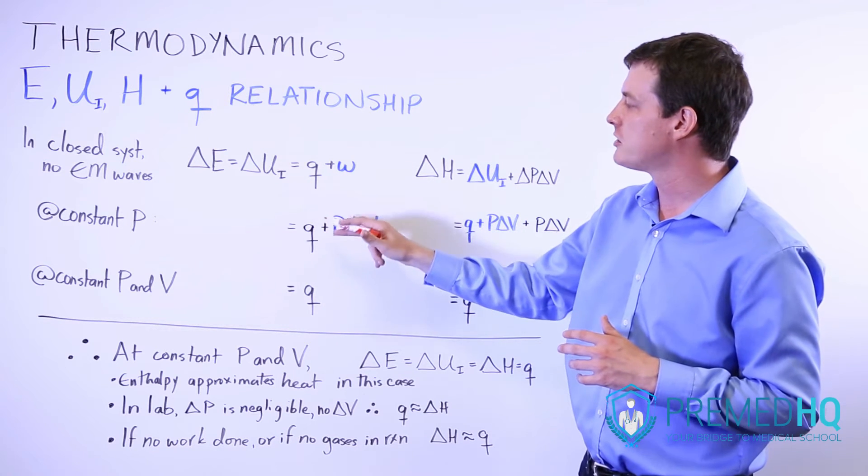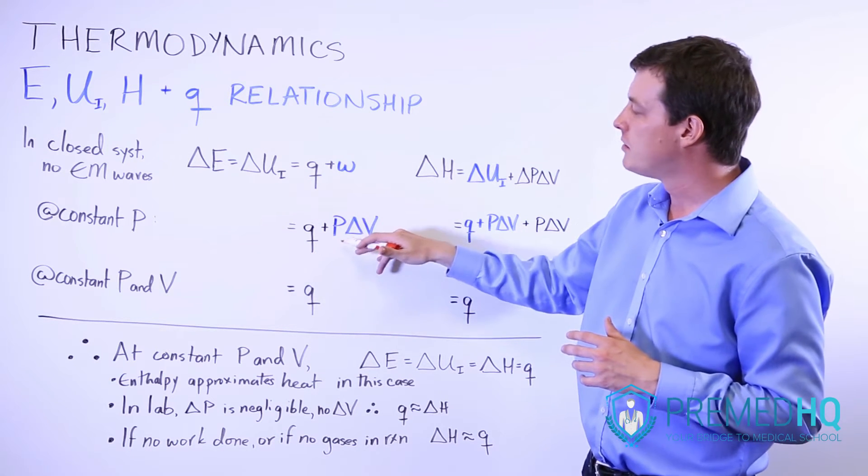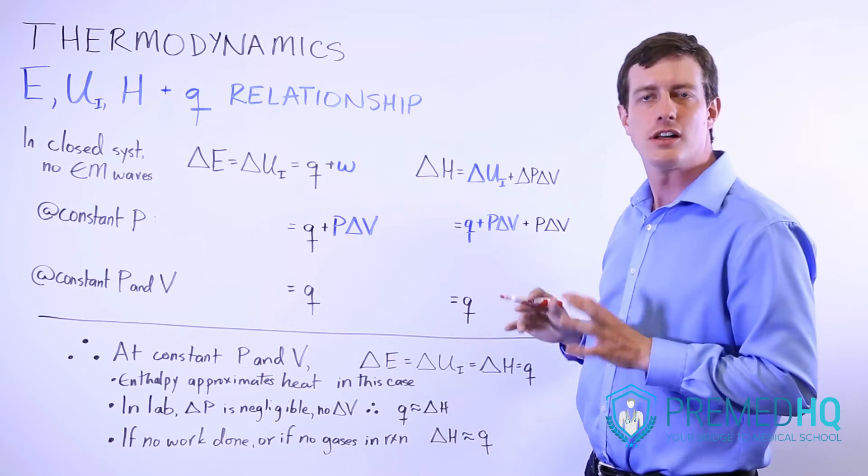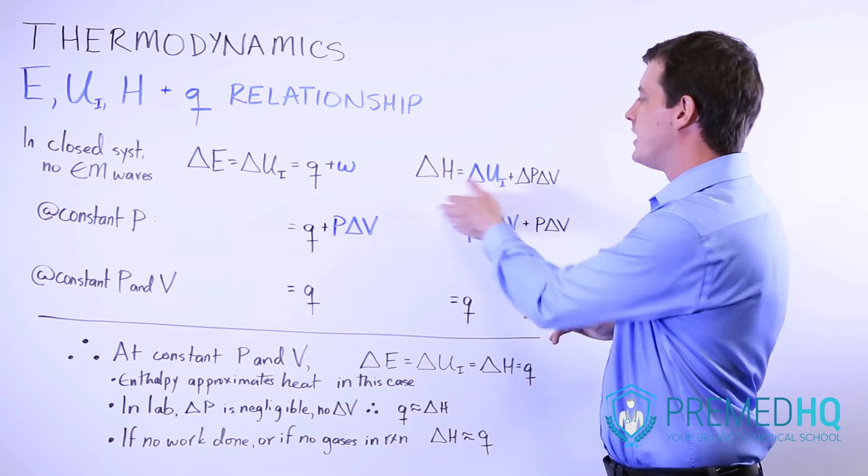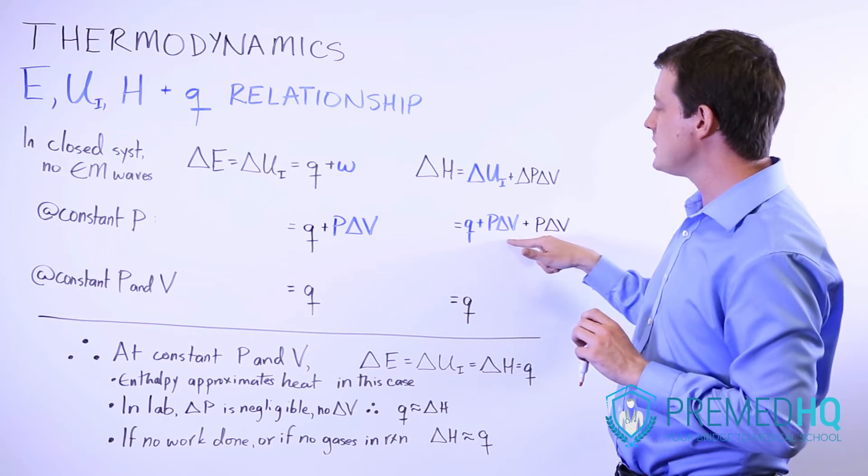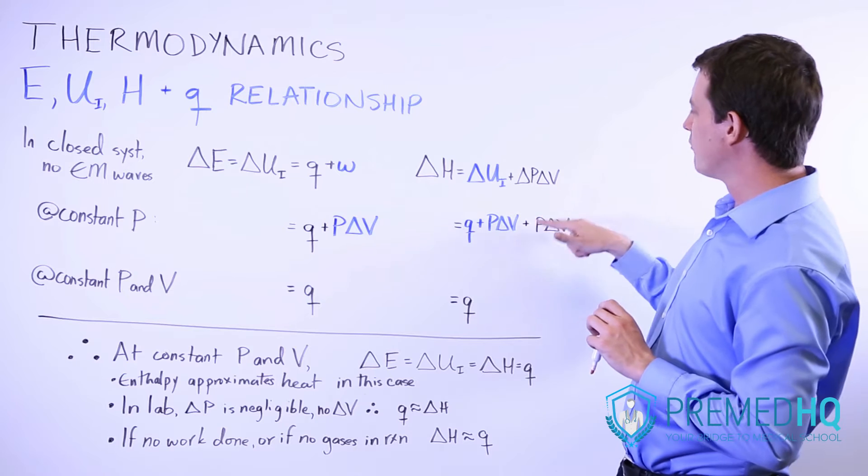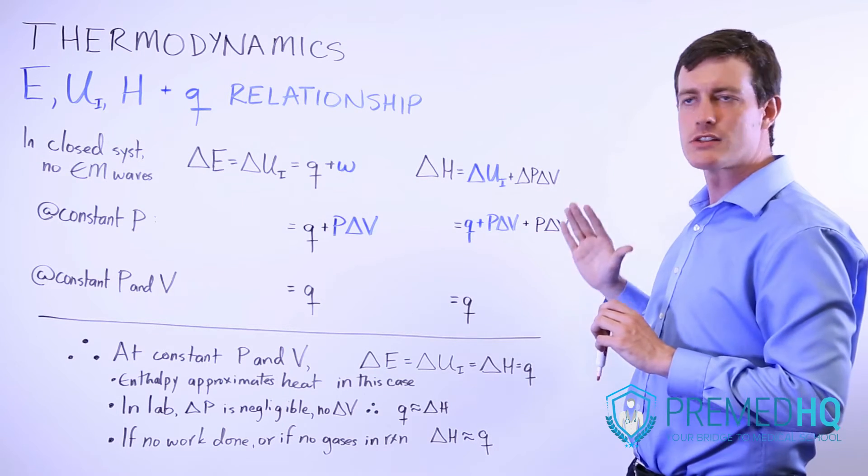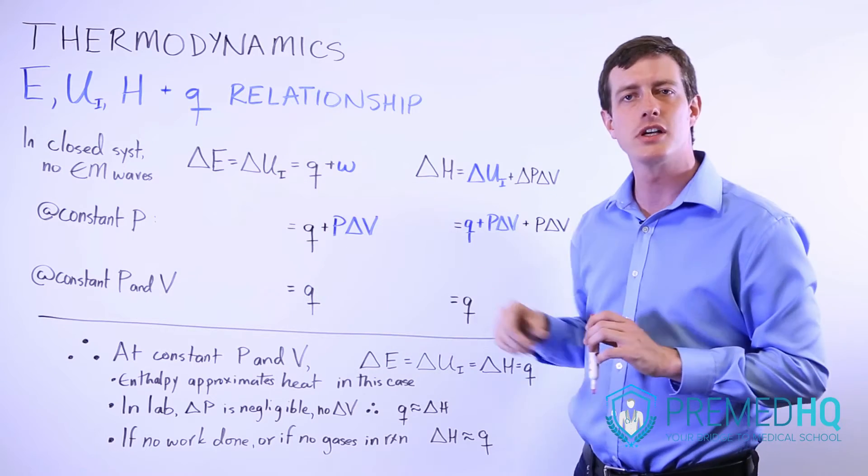So the change in internal energy will be equal to heat plus the change in volume times that constant pressure. The definition of enthalpy here still looks a bit different. It's q plus PΔV work, plus that original PΔV that we no longer have a change for, because we're dealing with constant pressure here.